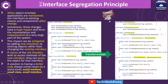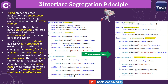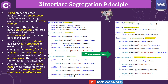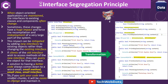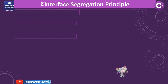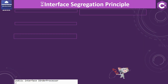A solution to having better code always comes down to one word: small. We are talking about small interfaces, small classes, and small methods. If you split your code into smaller chunks, it will be easier to change and maintain.